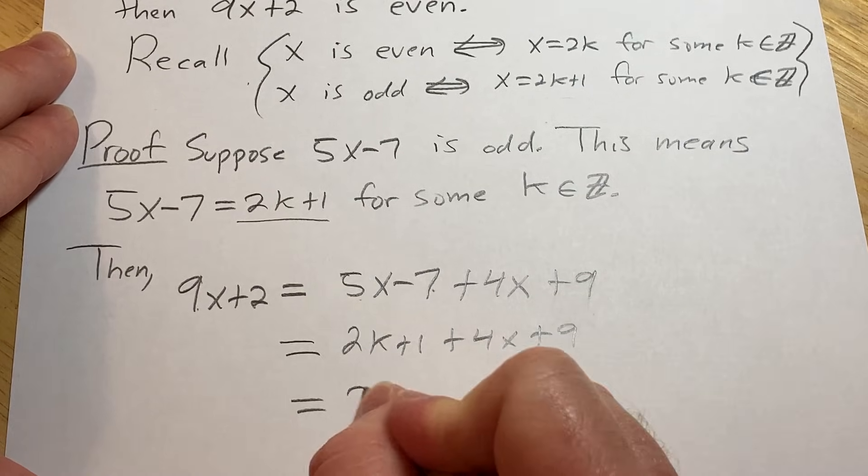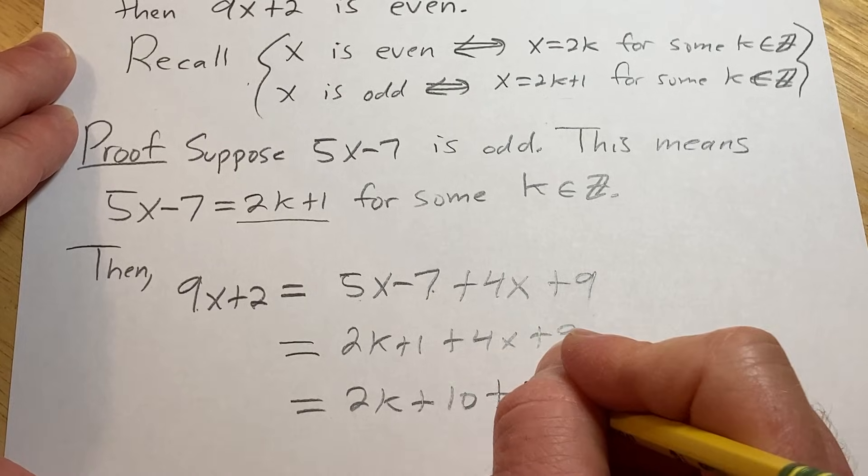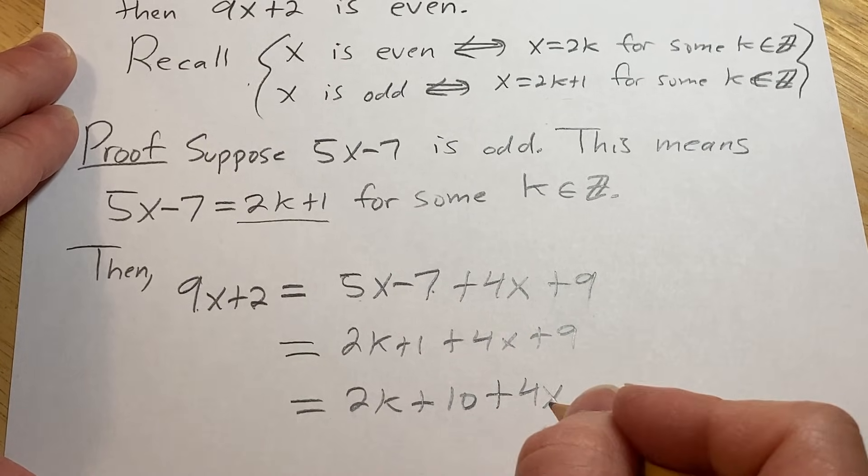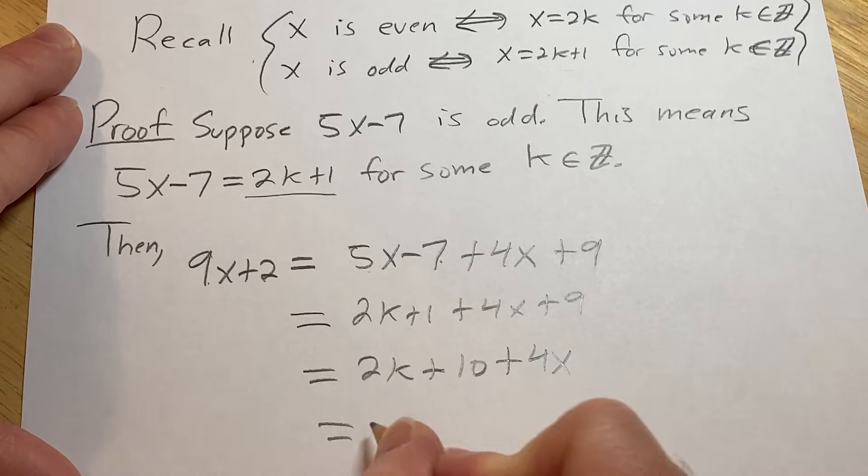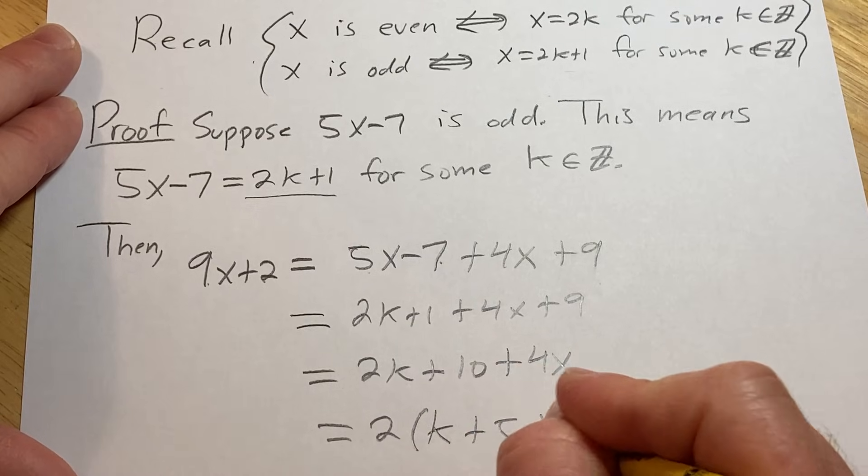So this is 2k plus 10 plus 4x. And we have to show that this is even. So basically, we have to show that this is a multiple of 2. Well, we can pull out a 2 and we get k plus 5 plus 2x.